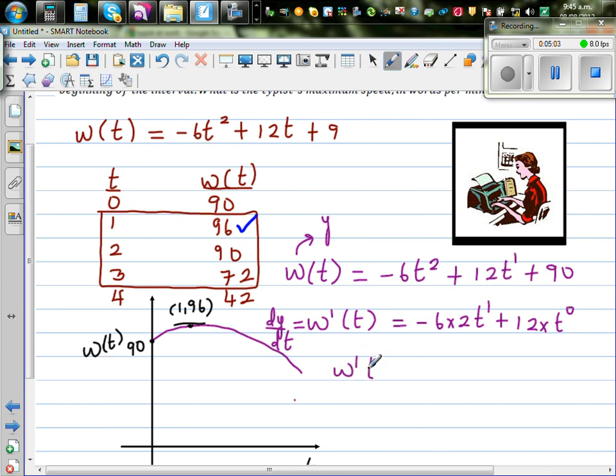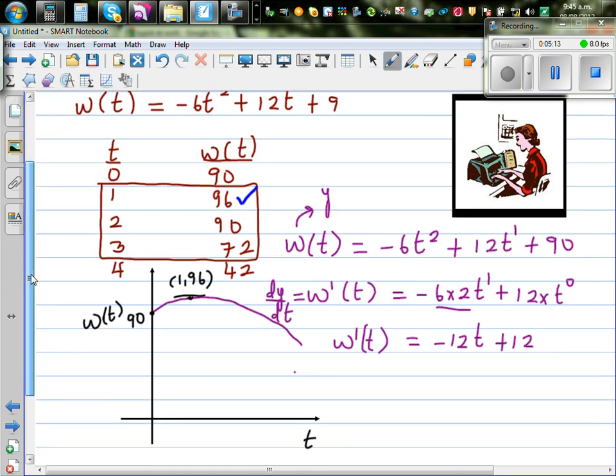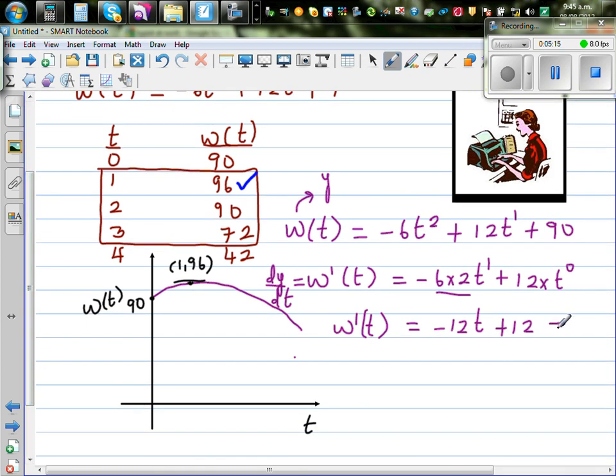Your gradient function W'(t) is -12t + 12. And I'm going to set this equal to zero, as you will know at the maximum you have the gradient of zero.